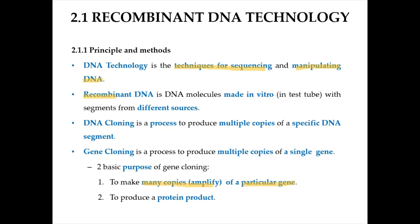In recombinant DNA technology, DNA technology is a technique for sequencing and manipulating DNA. When we say 'recombinant,' it means that the DNA molecule is made in vitro — in a test tube — from different sources. DNA cloning is a process to produce multiple copies of a specific DNA segment, while gene cloning is a process to produce multiple copies of a single gene. The purpose is to make many copies of a particular gene and also to produce a protein product.